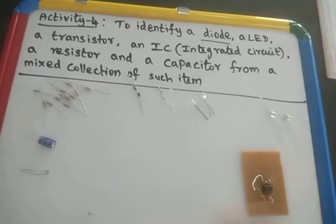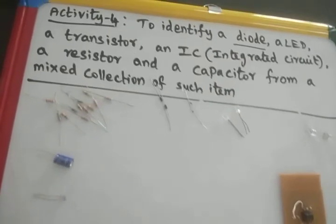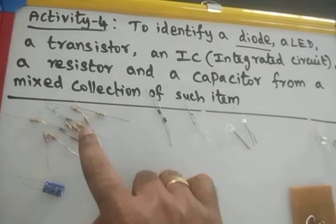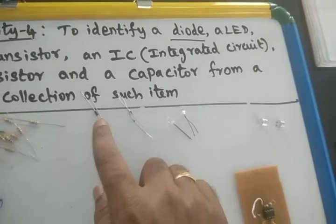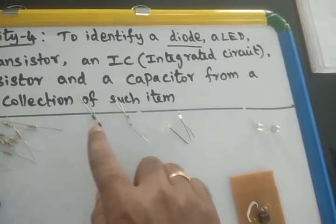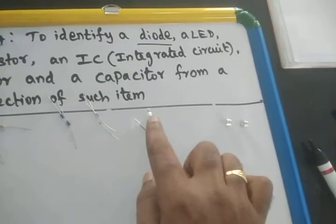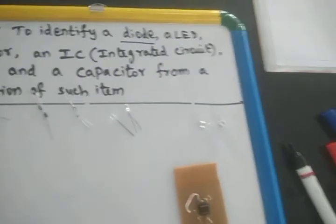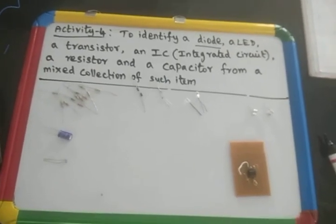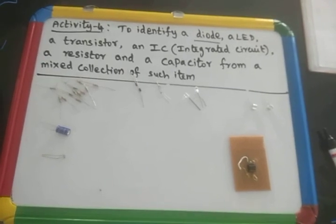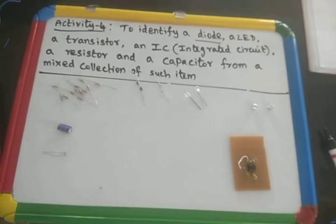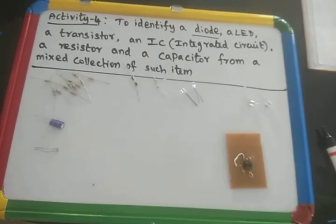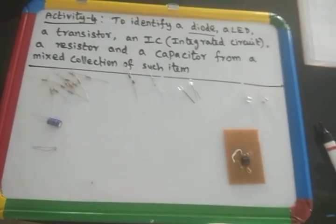If you identify all these things, your activity is over. The teacher may ask: how do you identify a capacitor? Microfarad is given. How do you identify a resistor? A color code is given. PN junction diode is black in color, Zener diode looks different, LED looks like a bulb, transistor has three legs, and LDR is also easy to identify. Activity 4 is very easy — just identify and explain the working, importance, and functions of each component clearly to the external examiner.